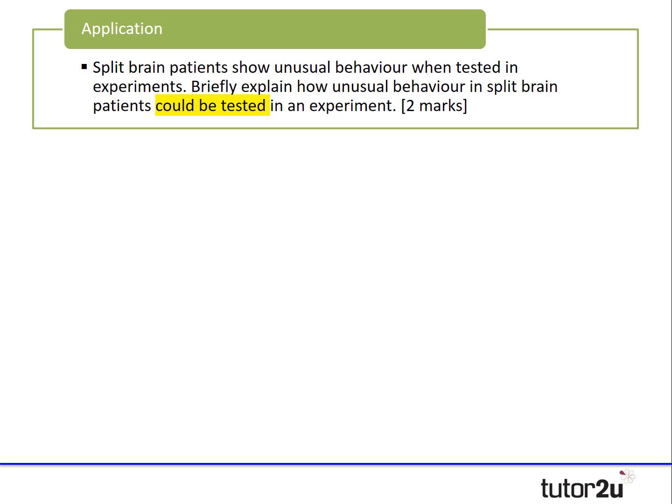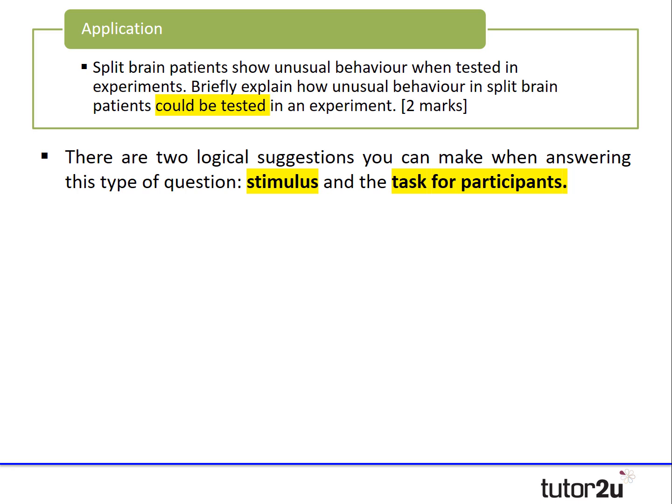Question two, the application question: split-brain patients show unusual behaviour when tested in experiments — briefly explain how unusual behaviour in split-brain patients could be tested in an experiment. Although it's only two marks, the key phrase is 'could be tested'. There are two logical suggestions you can make: you can talk about the stimulus or materials needed, or the task that participants are required to do.